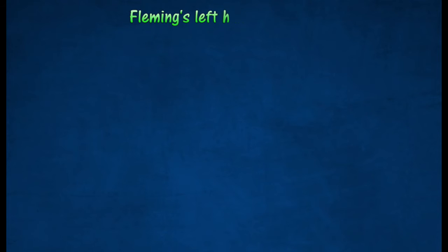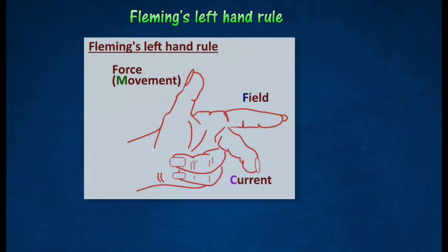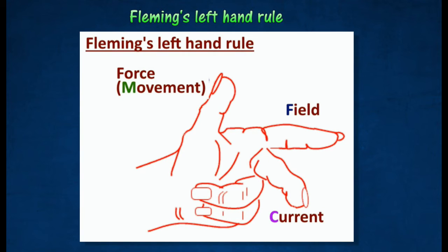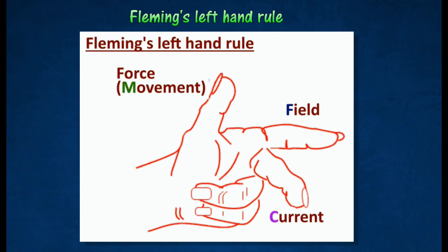The direction of movement of a current-carrying wire in a magnetic field can be determined using Fleming's left-hand rule. By arranging the left hand as shown in the image, the thumb and the first two fingers are held at right angles to each other. The first finger points in the direction of the magnetic field from north to south. The second finger points in the direction of the current from positive to negative. The thumb points in the direction of the force or the movement of the wire.